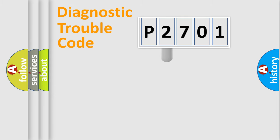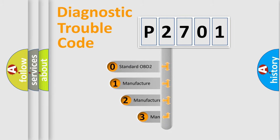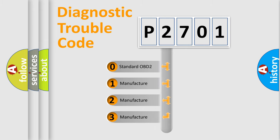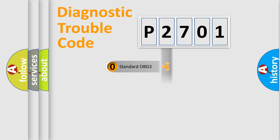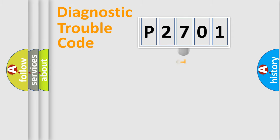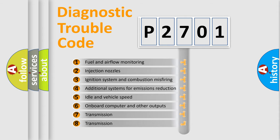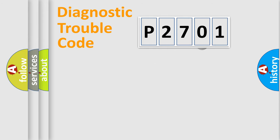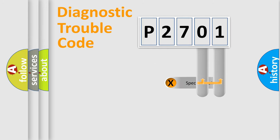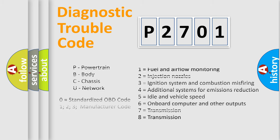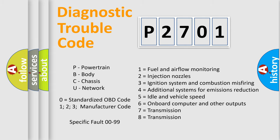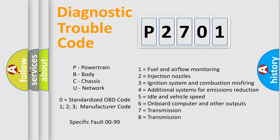This distribution is defined in the first character of the code. If the second character is expressed as zero, it is a standardized error. In the case of numbers 1, 2, or 3, it is a more specific expression of a car-specific error. The third character specifies a subset of errors. This distribution is valid only for the standardized DTC code, and only the last two characters define the specific fault of the group.